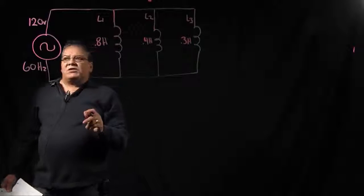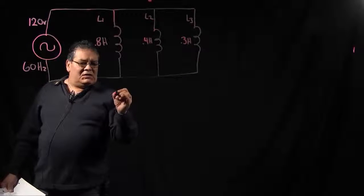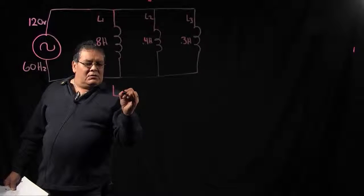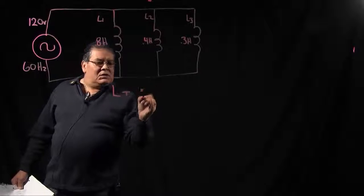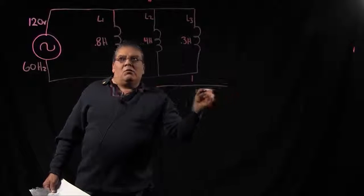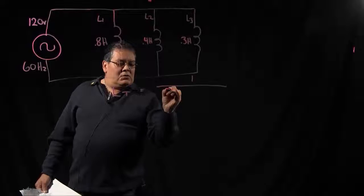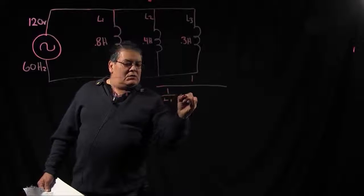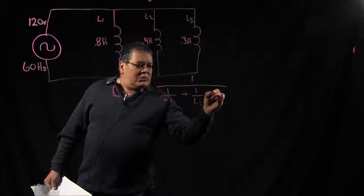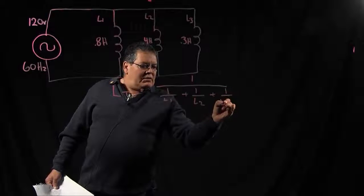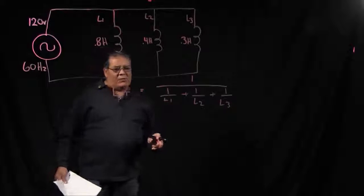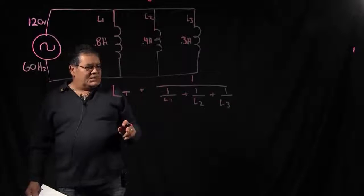Now for this one you are going to have to use the reciprocal formula for your total inductance. So L total equals 1 over L1 plus 1 over L2 plus 1 over L3. If you remember you had to do this same type of reciprocal formula when you dealt with resistors.